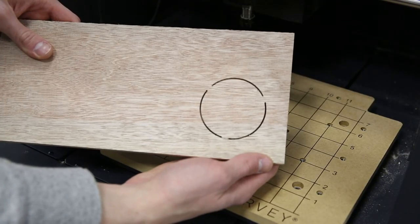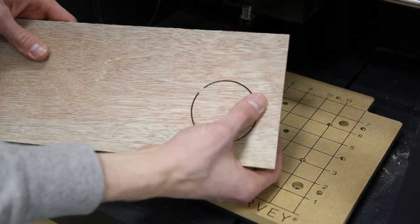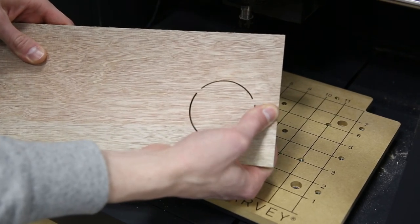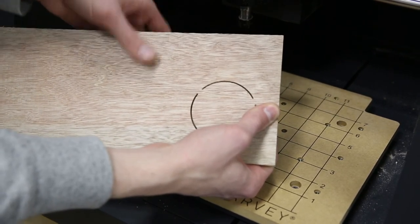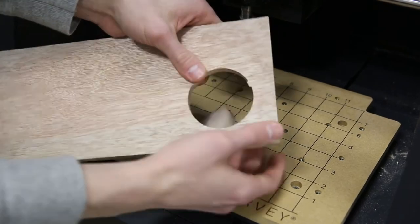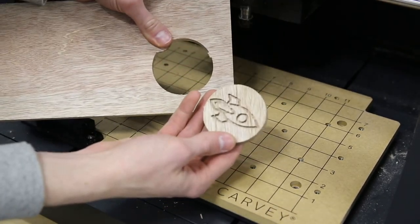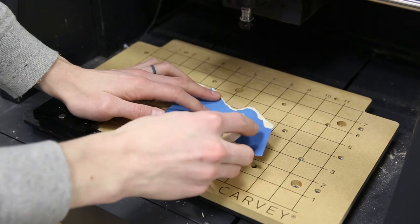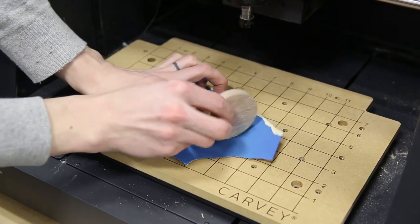Now that we're done cutting, we can pop out these tabs or remove them with a utility knife. Now that it's cut loose, we can sand and finish it.